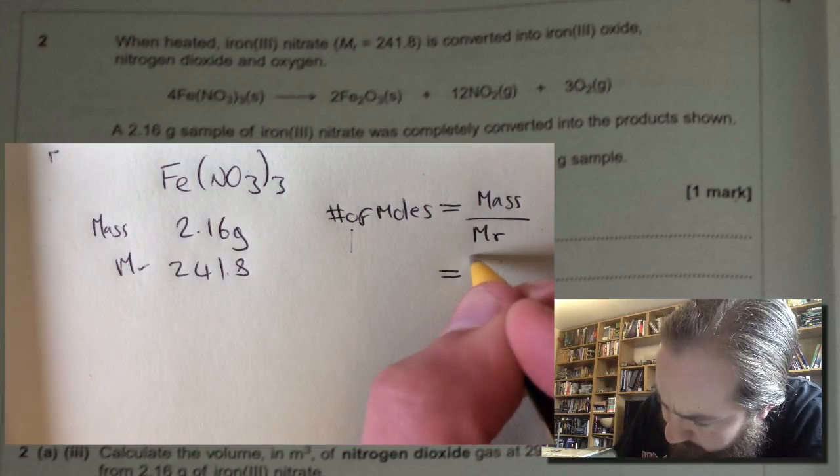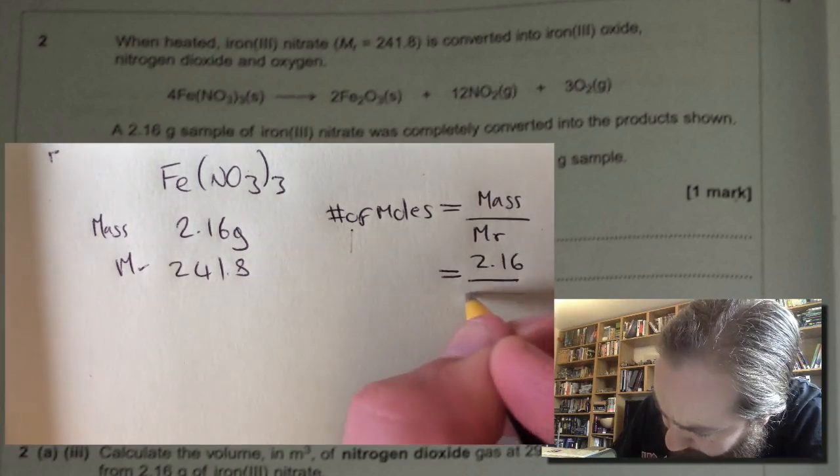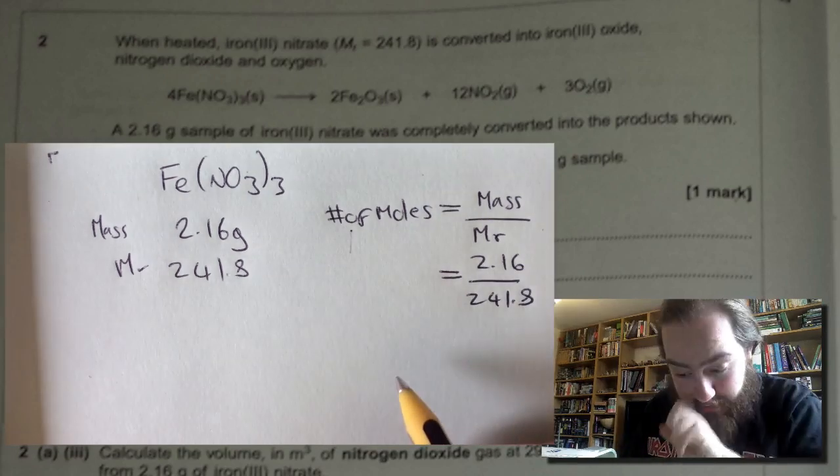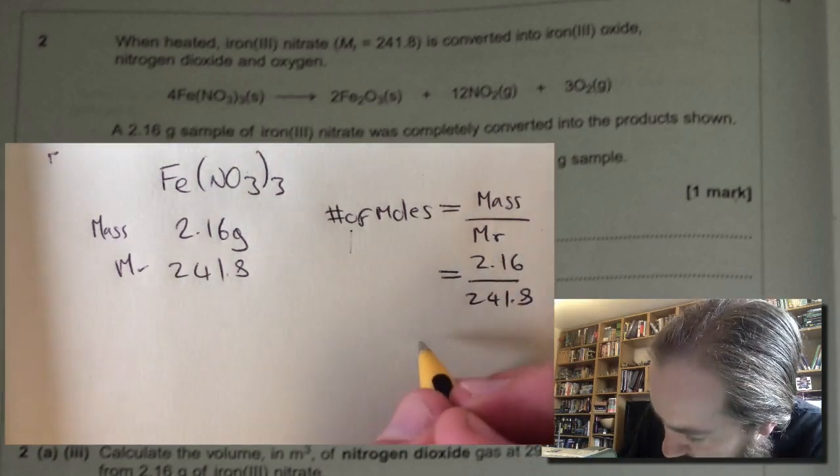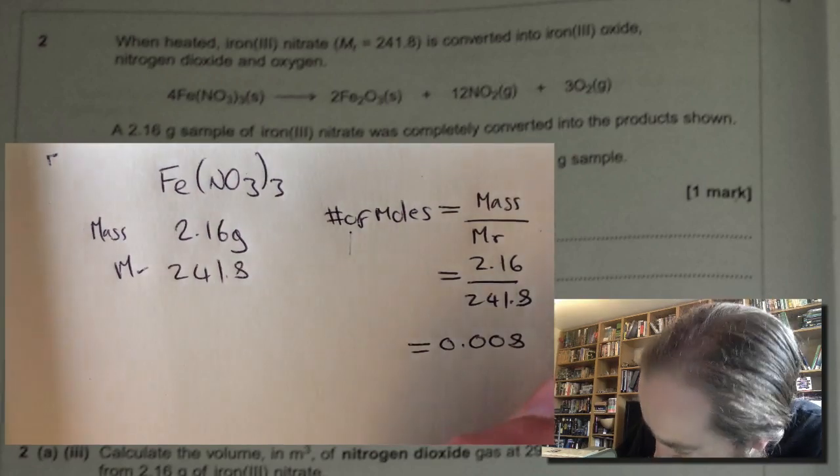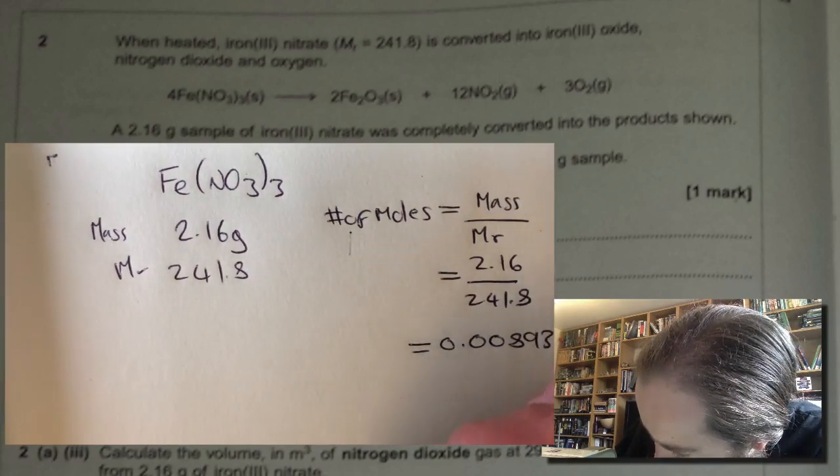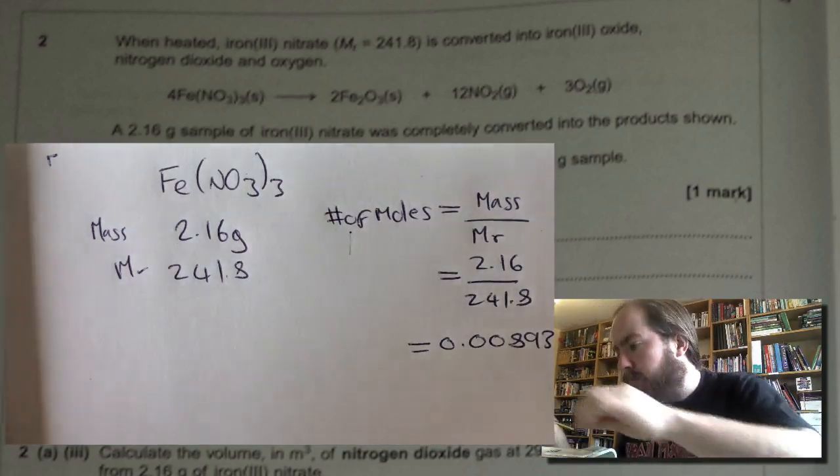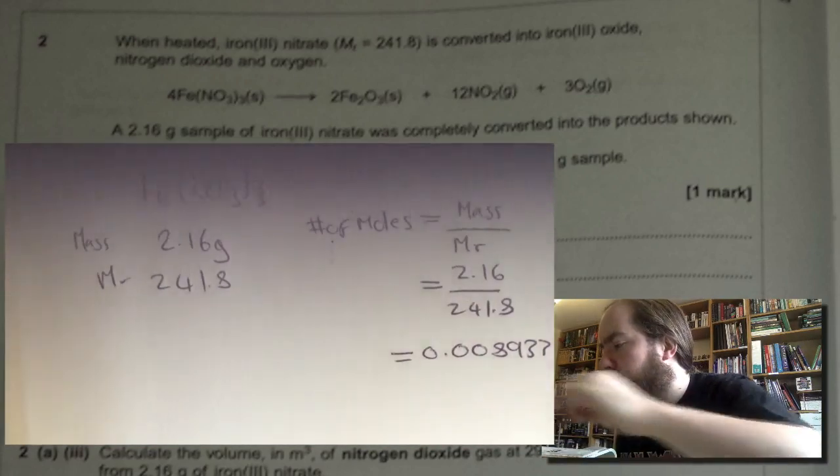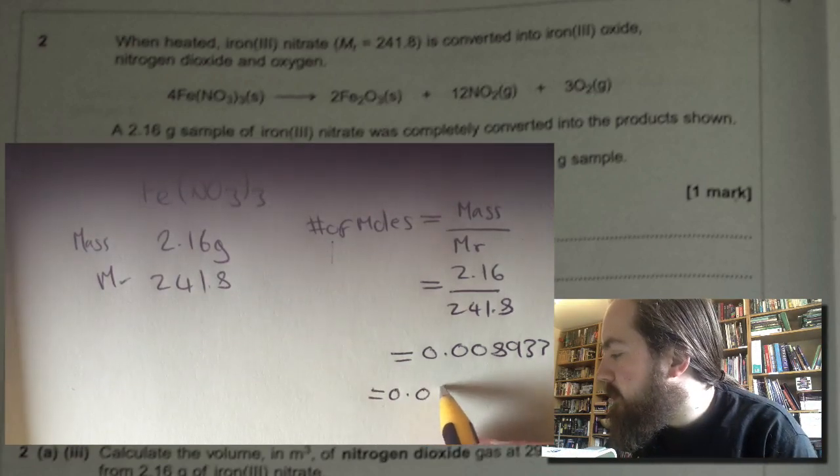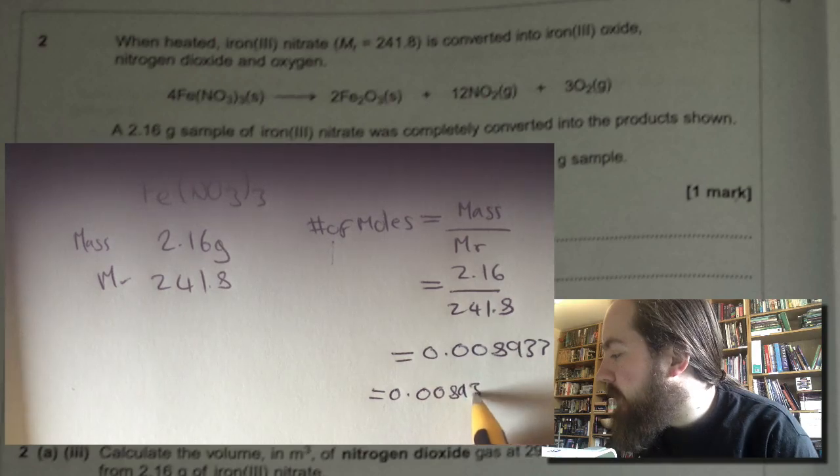Okay, so we're going to take 2.16 and divide that by 241.8, and that's going to give us an answer of about 0.008933 moles. But the question asks for three significant figures, so we just need to round that off. Equals 0.00893 moles.